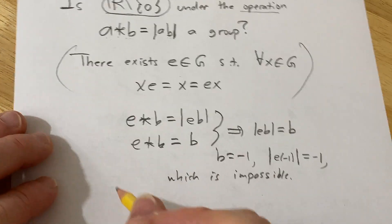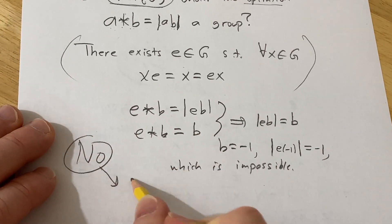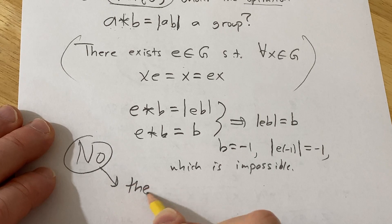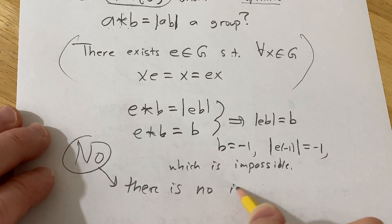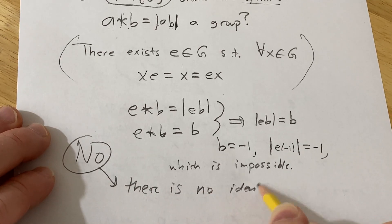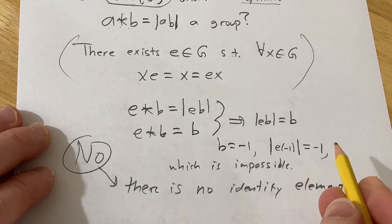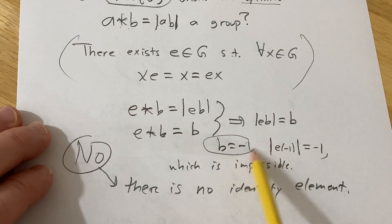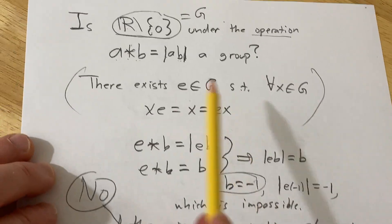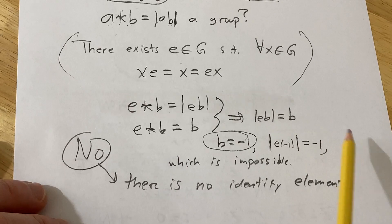So the answer is no — this is not a group. The reason is there is no identity element. If there were an identity, it would have to work for the element negative 1, which is non-zero and therefore in this set — but it doesn't work.